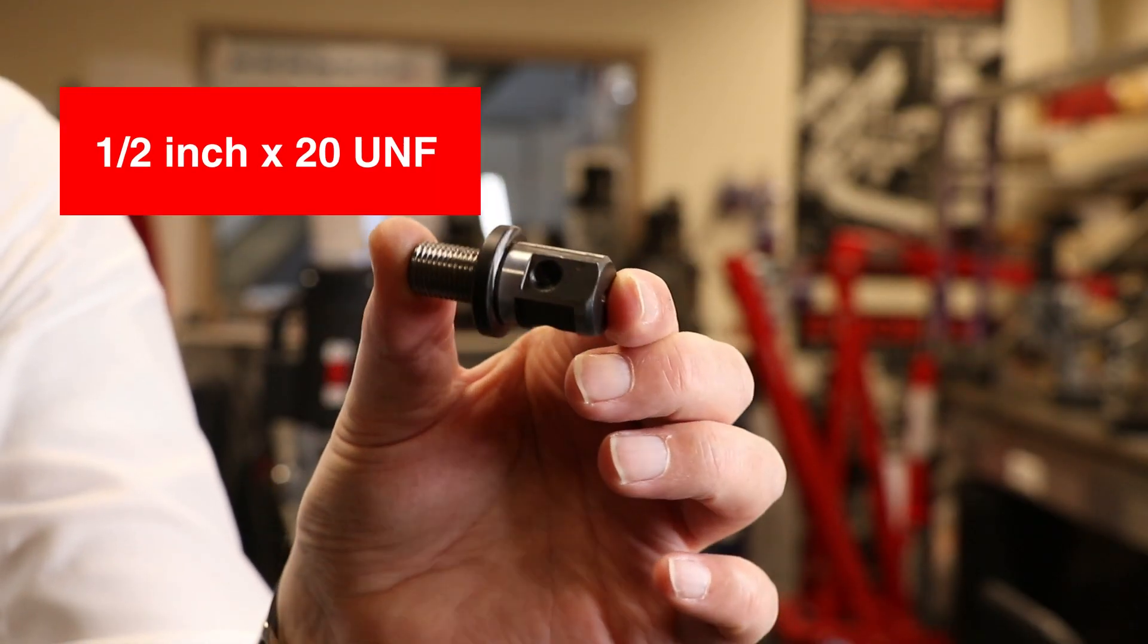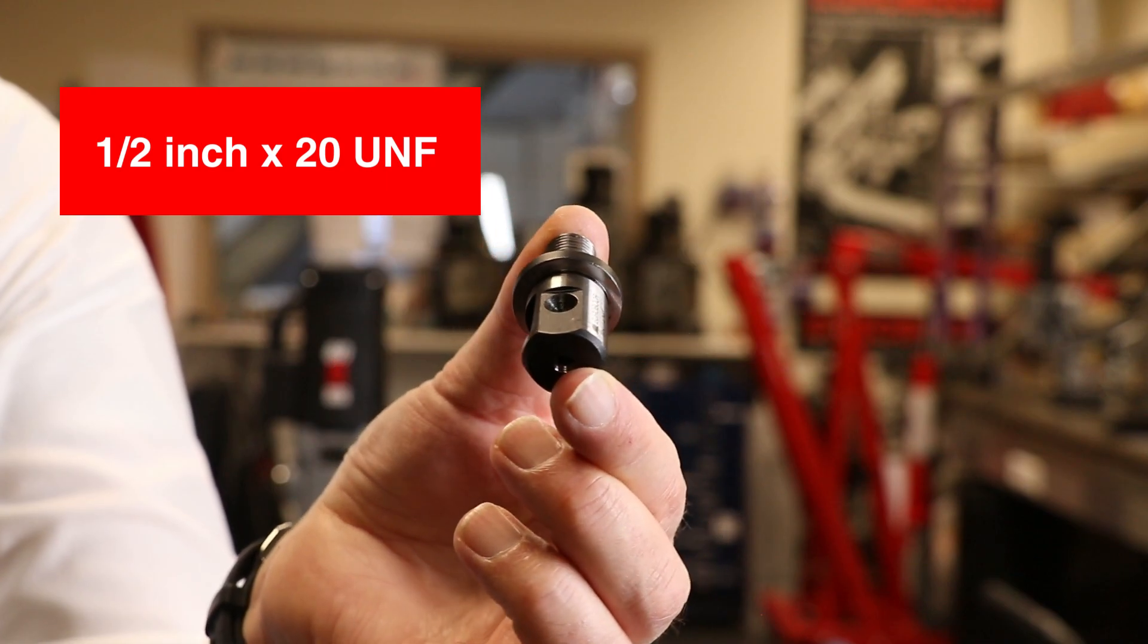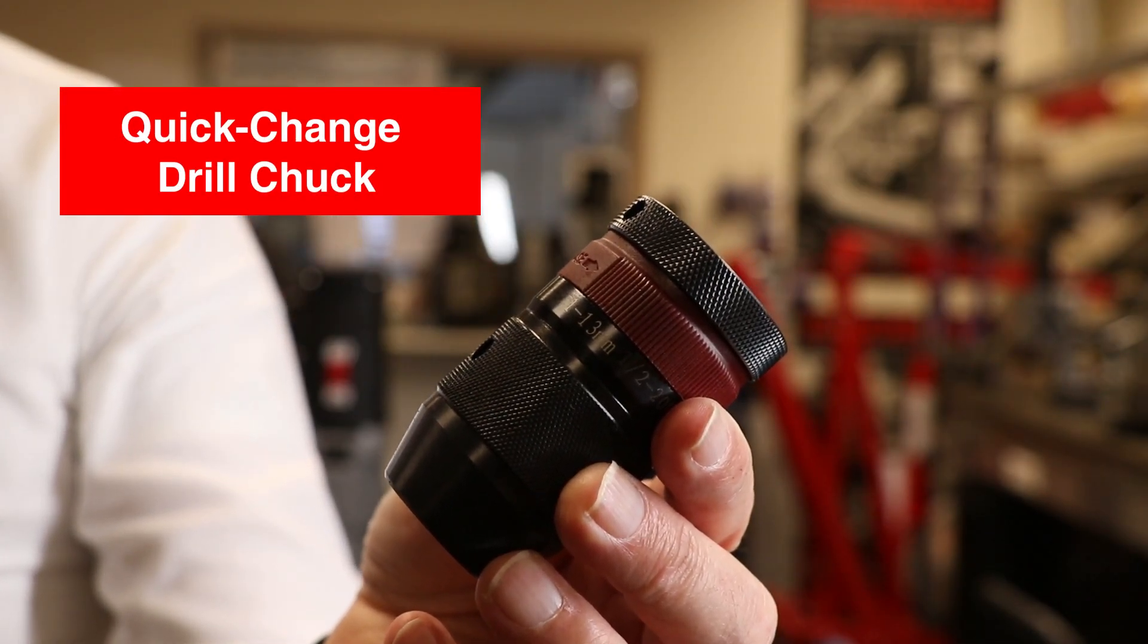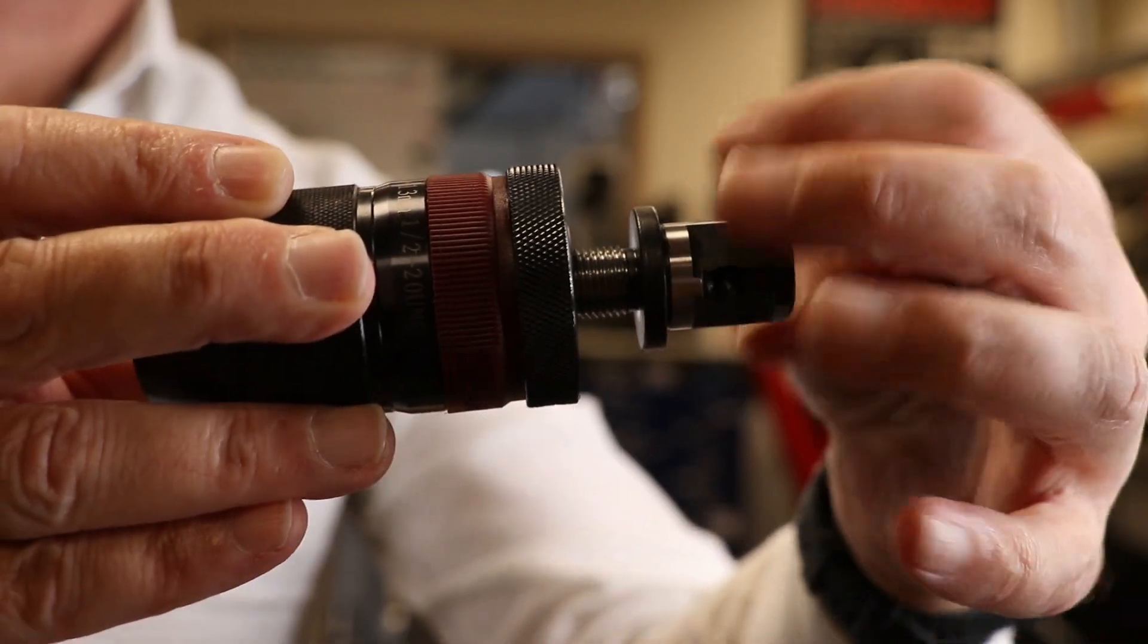It even has a half inch 20UNF adapter with which you can connect the included quick change drill chuck, allowing you to use and switch between different twist drills and countersinks in a heartbeat.